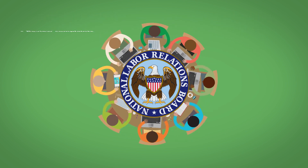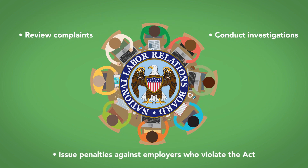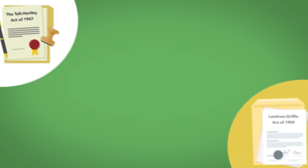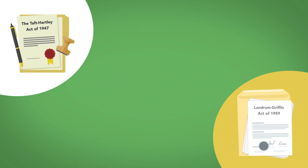The NLRB may review complaints, conduct investigations, and issue penalties against employers who violate the act. The act has been altered by two major amendments, both of them restricting unions.